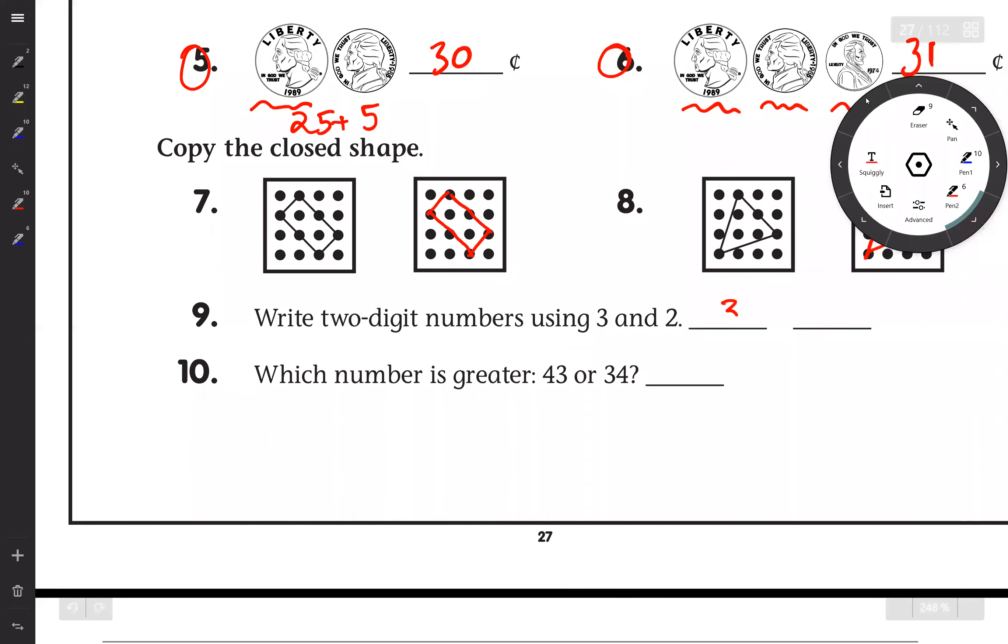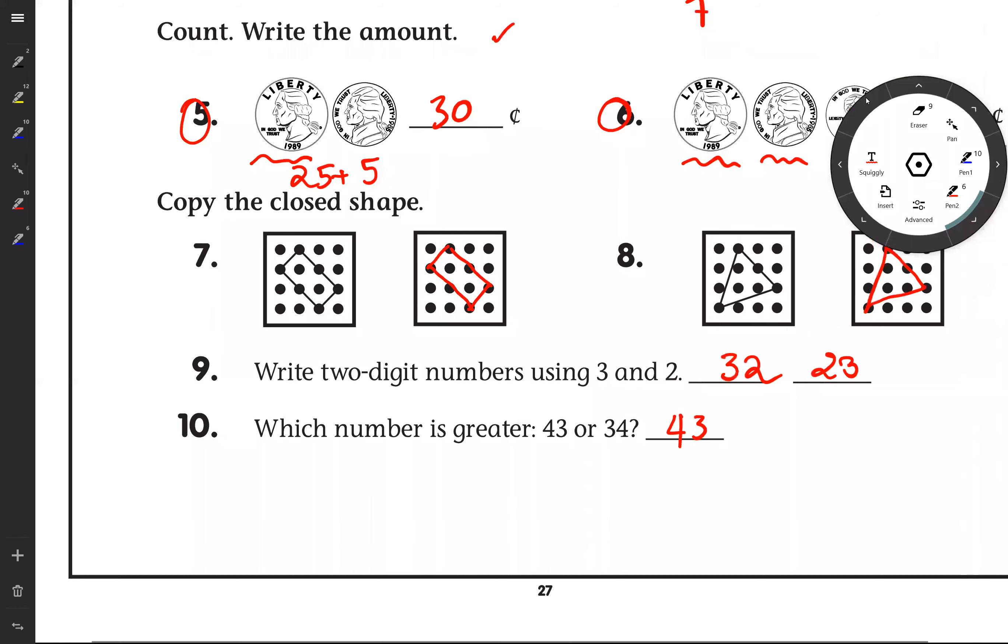Number 10: Which number is greater, 43 or 34? It's 43. 43 is 4 tens and 2 ones, and 34 is 3 tens and 4 ones. So you know, 4 tens is greater than 3 tens.